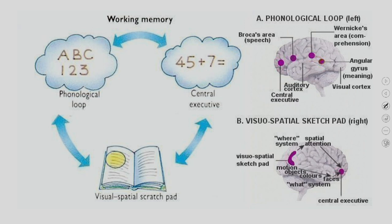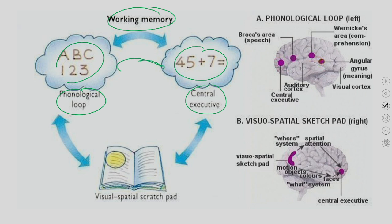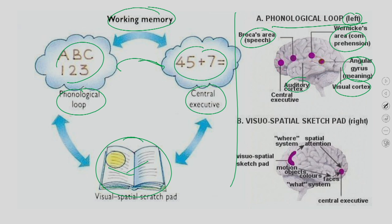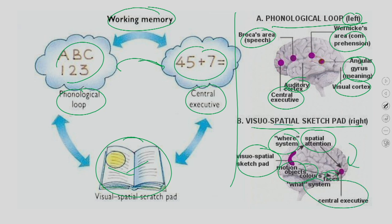So working memory has a phonological loop (A, B, C...), a central executive (e.g., solving 45 + 7), and a visuospatial sketchpad for all visual and spatial relations. Brain areas for the phonological loop in the left hemisphere include Broca's area, Wernicke's area, angular gyrus, and auditory cortex. For the visuospatial sketchpad in the right hemisphere: the where system, spatial information processing, motion, objects, colour, and faces.